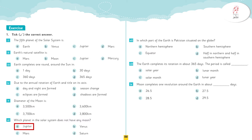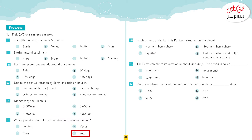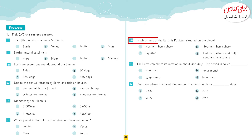Which planet in our solar system does not have any moon? Your options are Jupiter, Venus, Mars, and Saturn. Yes, it is Venus.